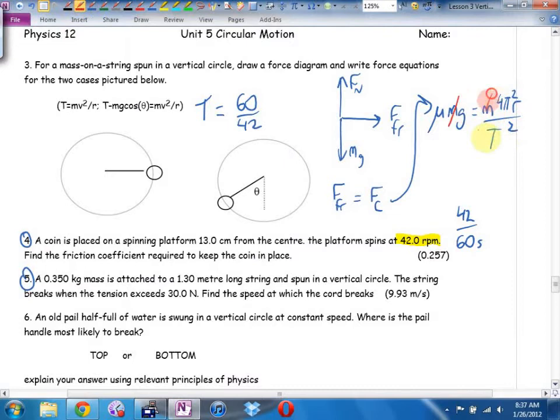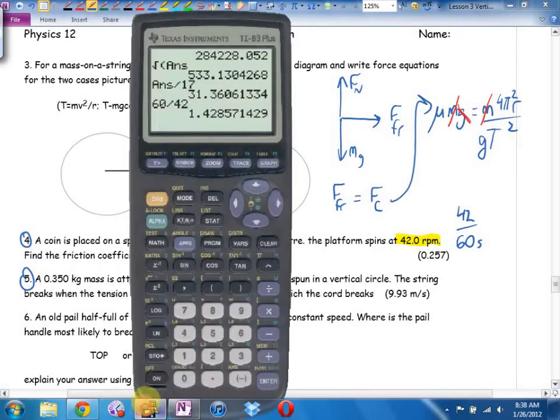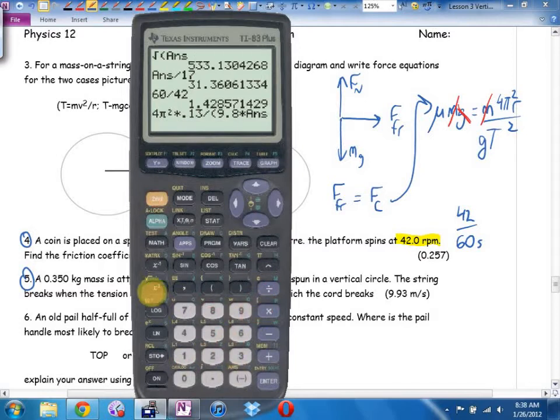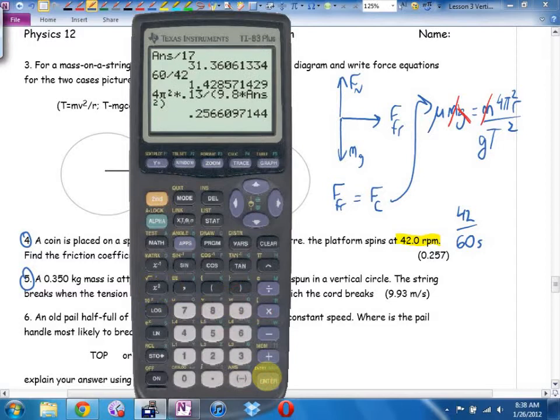I'm going to use the 4 pi squared r over t squared. Conveniently, I don't need to know how much the coin weighs, which is good. What do they want me to find in number 4? To get the mu by itself, divide by g. It's going to be 4 pi squared times 0.13 divided by 9.8 times the period squared. And that should be the coefficient of friction. Yeah, 0.257.